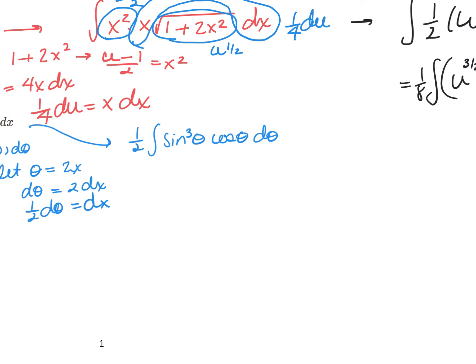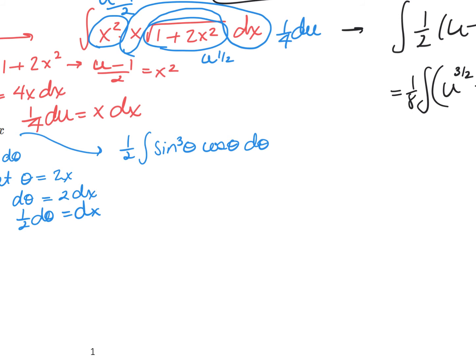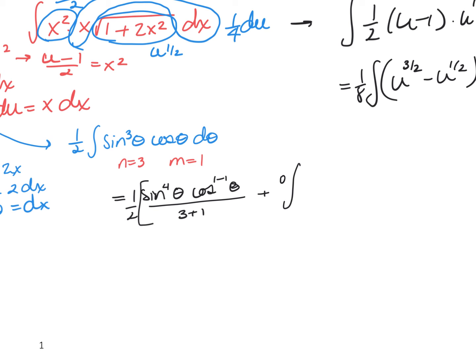Now, number 41 says, my n is 3, m is 1. Using this form, you're going to have, this is equal to the sine of n plus 1, so 4, oh, don't forget the 1 half out front, of my angle theta. The cosine of m, which is 1 minus 1, of theta, divided by m plus n, so 3 plus 1. And then plus the integration of, now it's going to be m minus 1, so this is 0. Oh, m minus 1 is 0. And then n plus m, which is 4. And then it would have had the sine of n, which is 3, and then theta, the cosine of m minus 2, so the cosine of negative 1, of theta, that's not the inverse, by the way, du.